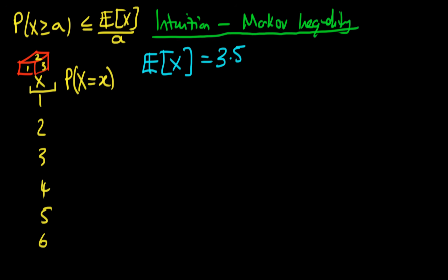For those familiar with a fair die, it is actually the case that the expectation of a fair die is 3.5. But there are other ways to get this. For example, if the probability that X is 1 or 2 is 0, and the probability that X is 5 or 6 is 0, and if the probability that X is 3 is 0.5 and the probability that X is 4 is 0.5, I would still get an expectation of X equal to 3.5. So I don't need to assume it's a fair die to enforce this particular condition.